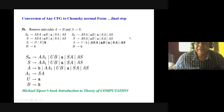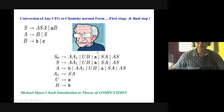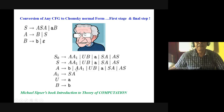This is the final Chomsky Normal Form conversion result — it looks complicated, but all rules are in Chomsky Normal Form. The original grammar had 6 rules; the Chomsky Normal Form conversion produces 18 rules. But these 18 are simpler than the original 6, because all rules have exactly two variables on the right-hand side, making them simpler for the computer.